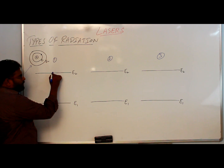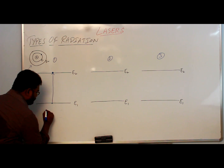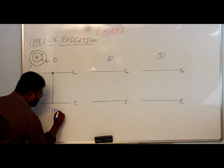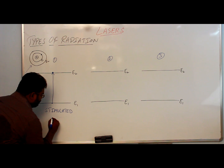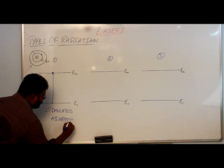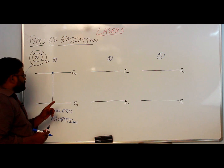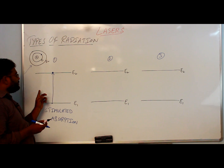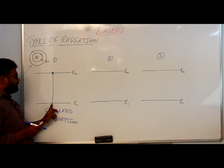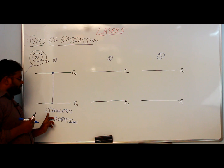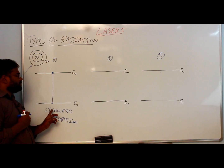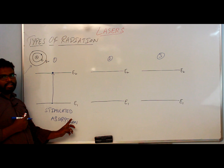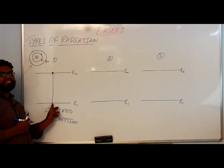This process is known as stimulated absorption. Stimulated means we are giving energy; since we are supplying energy to the atom, the electron absorbs it and goes to the excited state. Giving energy is called stimulated; electrons taking the energy is called absorption. So the entire process is known as stimulated absorption, and due to this, the electron in the ground state goes to the excited state.